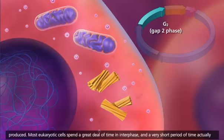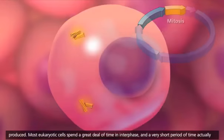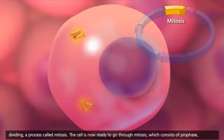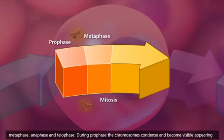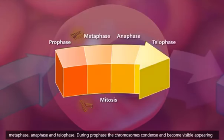Most eukaryotic cells spend a great deal of time in interphase, and a very short period of time actually dividing, a process called mitosis. The cell is now ready to go through mitosis, which consists of prophase, metaphase, anaphase, and telophase.